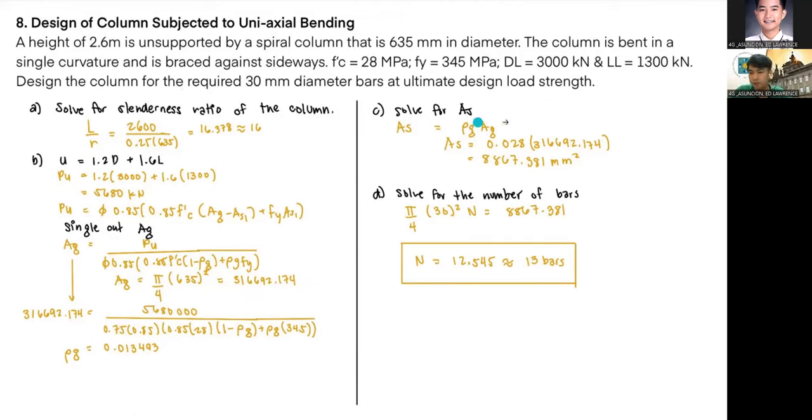Our next step is to solve for As. As is simply ρg times Ag, giving us 867.381 mm². Our last step is to solve for the number of bars using the formula: area times N equals As. With this, we get the number of bars, which is 12.545 for the spiral column. We'll round it up to get 13 bars.